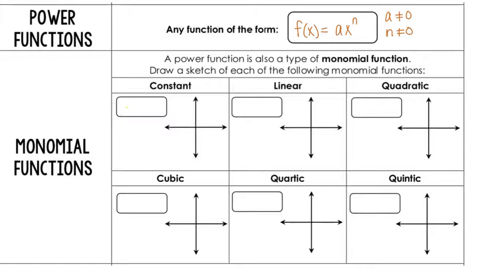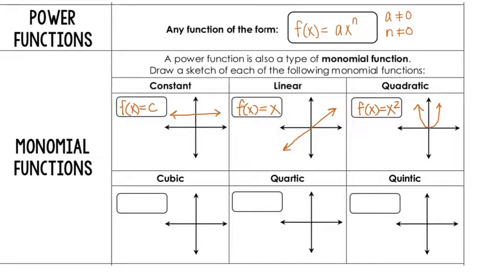A power function can be a monomial function. A constant function is f(x) = c, just some constant value. A linear function is f(x) = x, a nice straight line. Quadratic is f(x) = x squared — a parabola. And then the cubic function is f(x) = x cubed. All of these should be familiar from your parent functions.